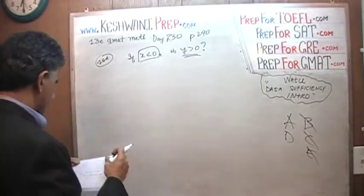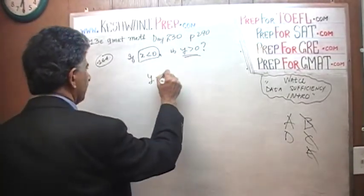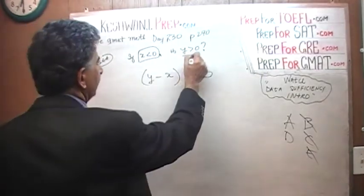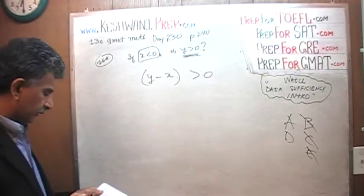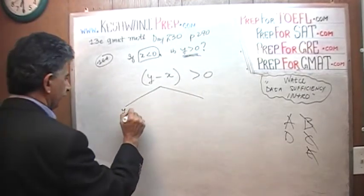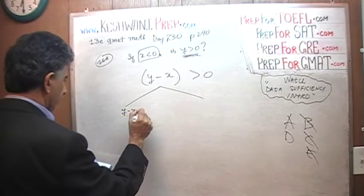In the second statement, they tell us that y minus x is positive. Does that enable us to see if y is positive? Let's find out. Y minus x, we are told, is greater than zero.